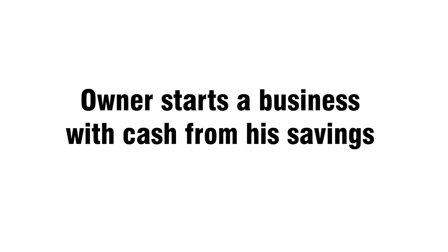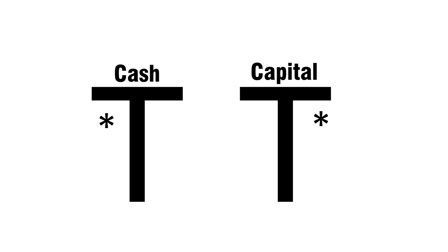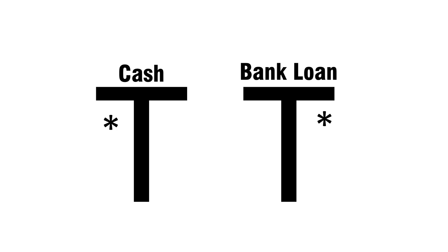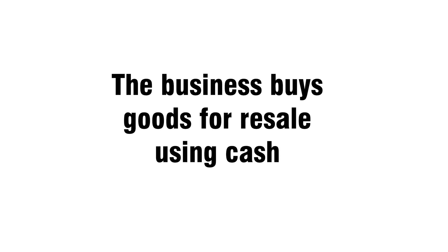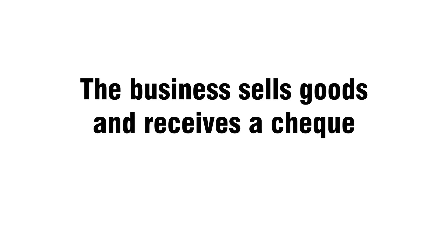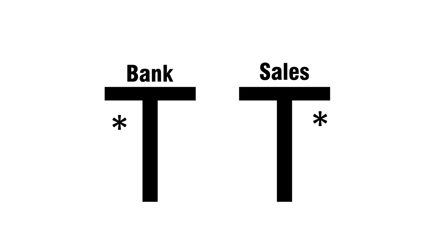Owner starts a business with cash from his savings: debit cash, credit capital. The business borrows cash from the bank: debit cash, credit bank loan. The business buys goods for resale using cash: debit purchases, credit cash. The business sells goods and receives a check: debit bank, credit sales.